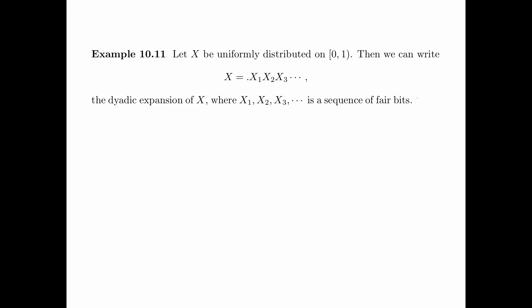Let x be uniformly distributed on the interval [0, 1]. Then we can write x as 0.x₁x₂x₃..., that is the dyadic expansion of x, where x₁, x₂, x₃, etc. is a sequence of fair bits — that is, uniform i.i.d. bits. Then the entropy of x equals the entropy of x₁, x₂, x₃, and so on. Because these bits are i.i.d., the joint entropy equals the sum of H(xᵢ) for i = 1 to infinity, which equals the sum of the constant value 1, and this equals infinity. That is, the amount of information contained in the random variable x is infinite.